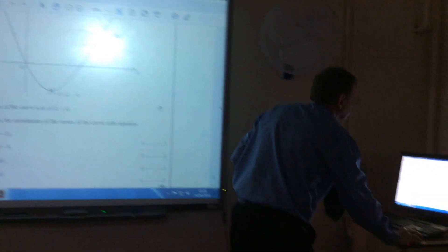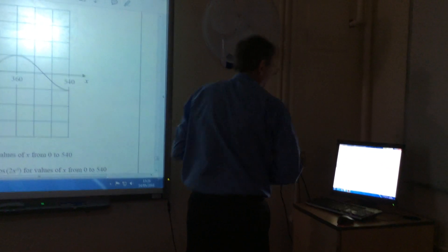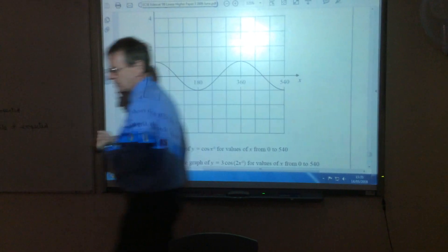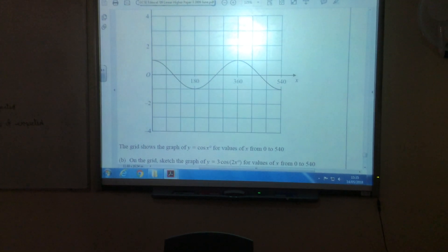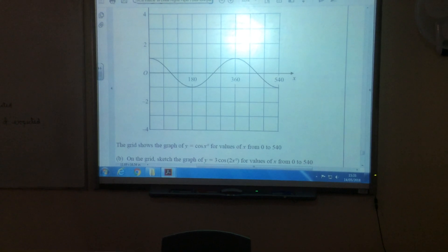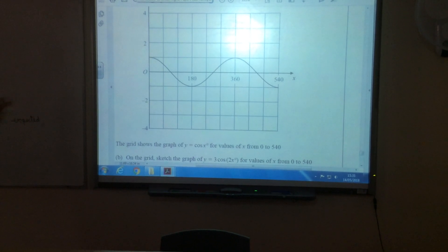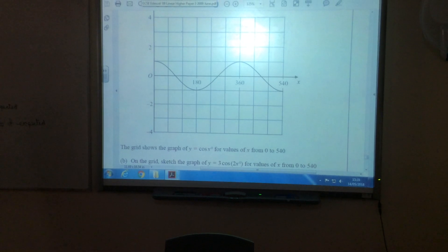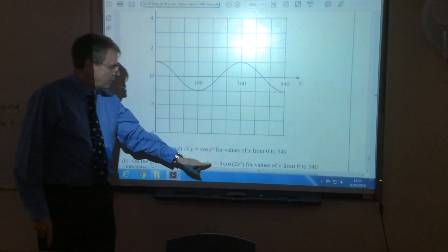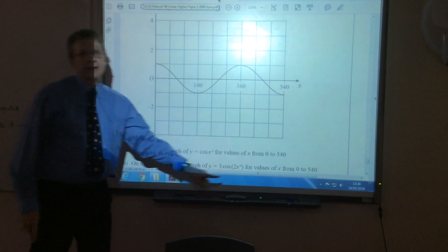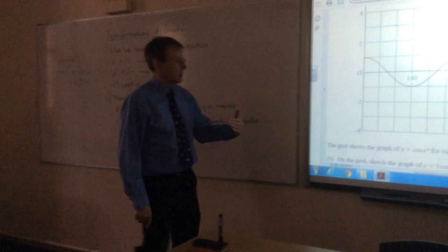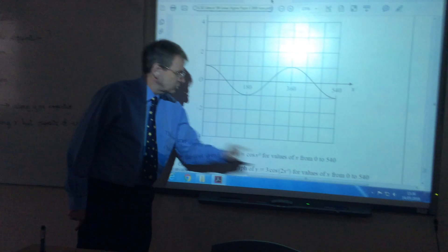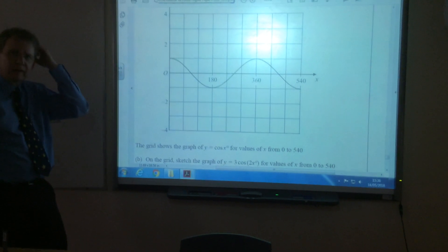Right, second question. There is a graph, which is actually quite a good revision as well, because you're supposed to know that graph. That's the graph of y equals cos x, and you're supposed to be able to sketch it if you're asked. But in this case, they had sketched it for you. But they want the graph of y equals 3 cos 2x. Right, so this time there's two transformations. If you compare that to that, two things have been done. So let's do one thing at a time.